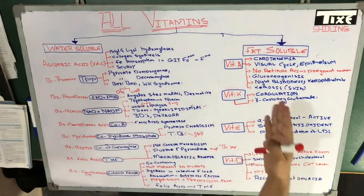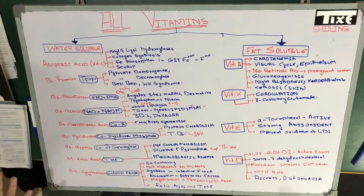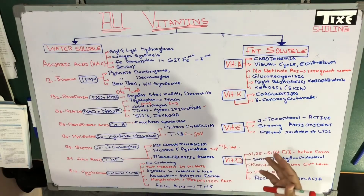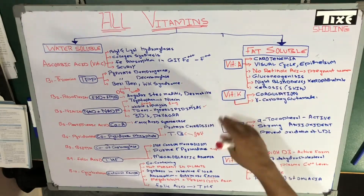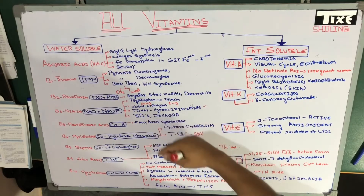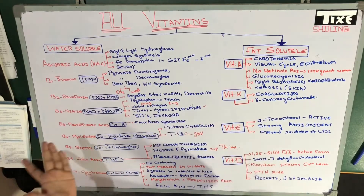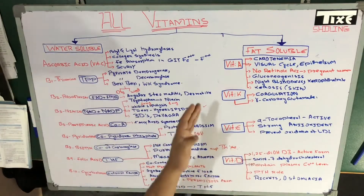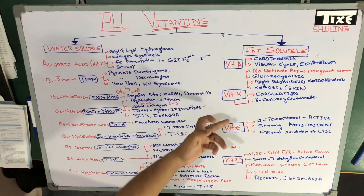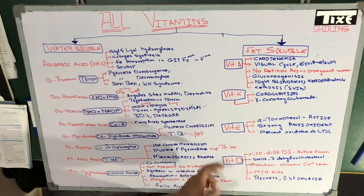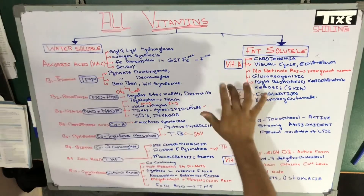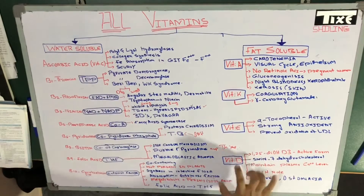Now let's move towards the fat-soluble vitamins. Fat-soluble vitamins are easy compared to the B vitamins — B1, B2, B3 — because we have vitamin A, vitamin K, vitamin E, and vitamin D. That's it. The important vitamins are vitamin A and vitamin D.